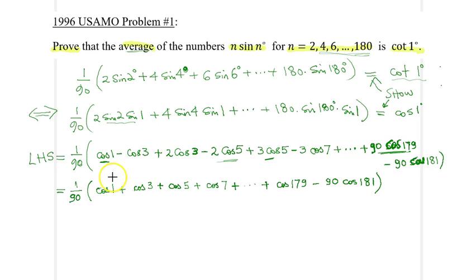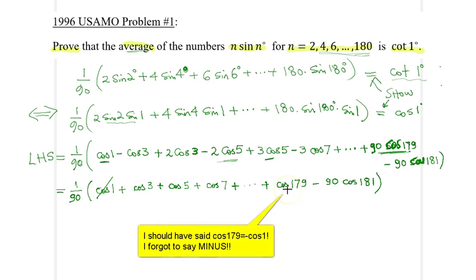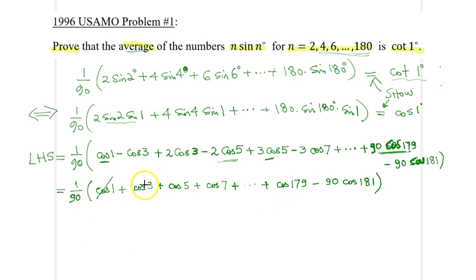I would just observe that cosine 1 is simply equal to cosine 179, in a similar way, cosine 3 would be simply equal to cosine 177, and so on, so they will all cancel out. All I will be left is the last term inside the brackets, so therefore, the 90s will also cancel out, and all I will be left would be minus cosine 181, which is simply minus minus cosine 1, which is, and finally, I can say that would be equal to just cosine 1, and I have shown the desired result, and we are done.